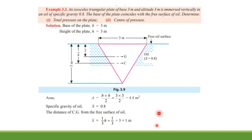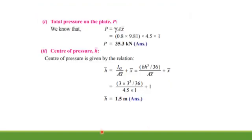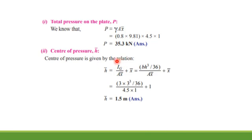Entering all values into P = γAx̄ — γ = 0.8 × 9.81 kN/m³, A = 4.5 m², x̄ = 1 m — gives total pressure P = 35.3 kN. For center of pressure, h̄ = IG/(Ax̄) + x̄. For a triangle, IG = bh³/36 = (3 × 3³)/36. Entering all values gives h̄ = 1.5 meters.